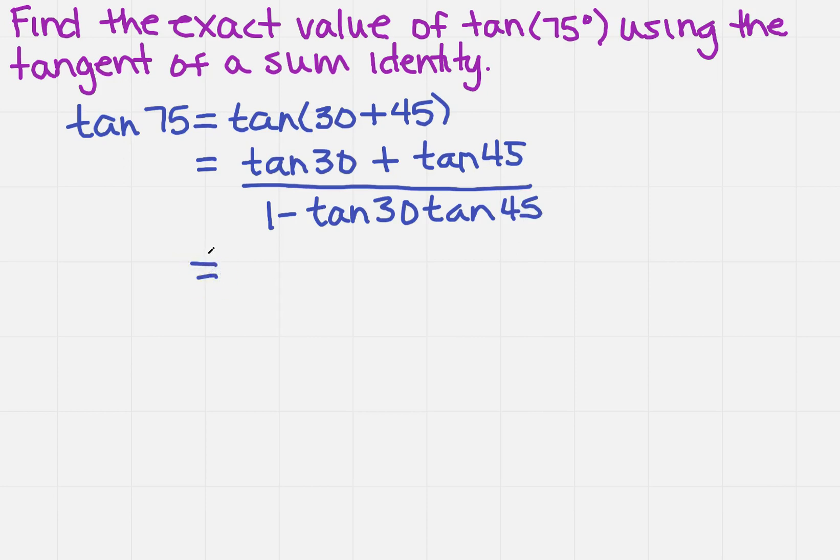So now I need to know what each one of those values is. So I'm going to get the square root of 3 over 3 plus 1 divided by 1 minus the square root of 3 over 3 times 1. I want to simplify that, and I'm going to do it in baby steps so that everybody can follow along.